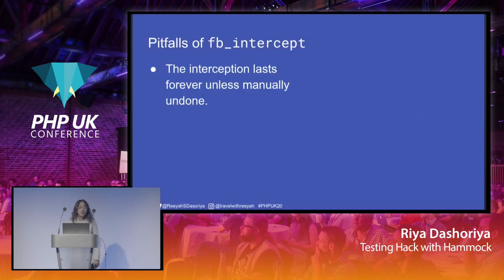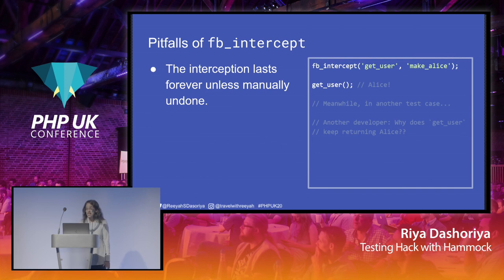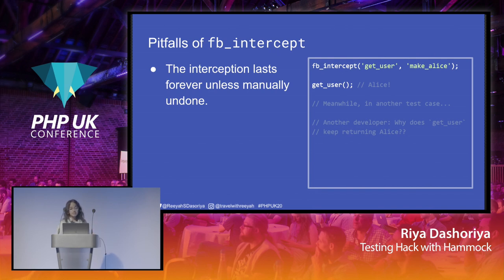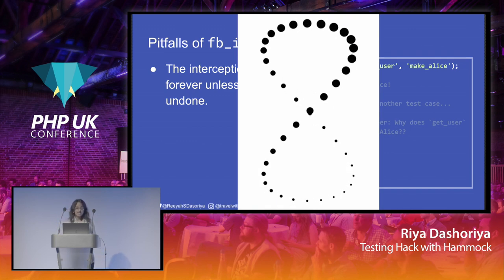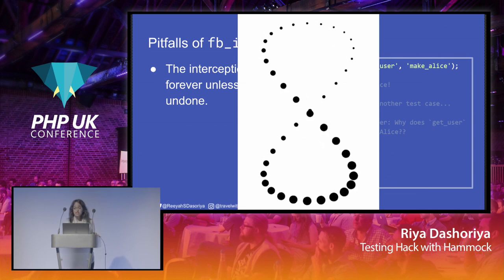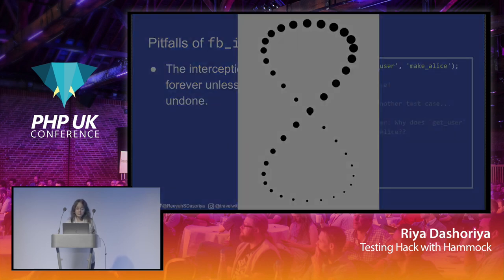The third pitfall is that the interception lasts forever unless manually undone. If you intercept a function, it is intercepted forever. If I intercept 'get_user' and return Alice in my test, my colleague's test that calls 'get_user' — because this function was intercepted in another test — will still return Alice instead of the original values it should return. It will be forever, and it leads to confusing behaviour. Once you intercept it, you need to manually remove it, otherwise it won't work.